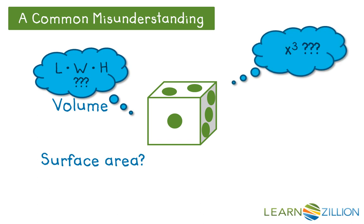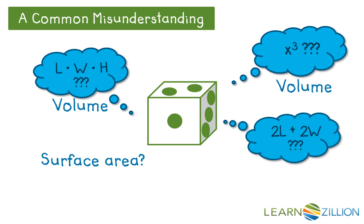Well, how about the formula x cubed? Now, that won't help find surface area. That's another volume formula. So maybe the formula 2l plus 2w. No, that's a formula for perimeter of a rectangle. The thing to remember is that while formulas are really useful, we've got to be careful not to use them unless we're certain that we're using them correctly.